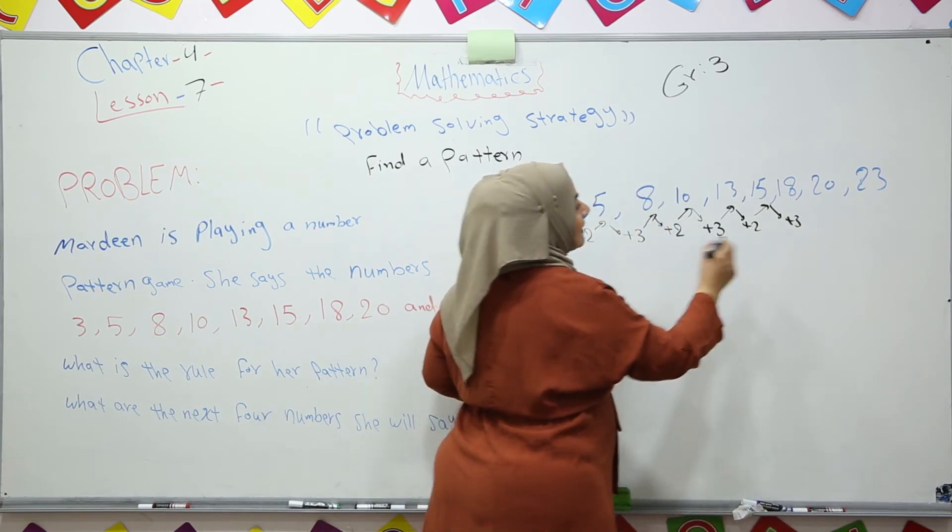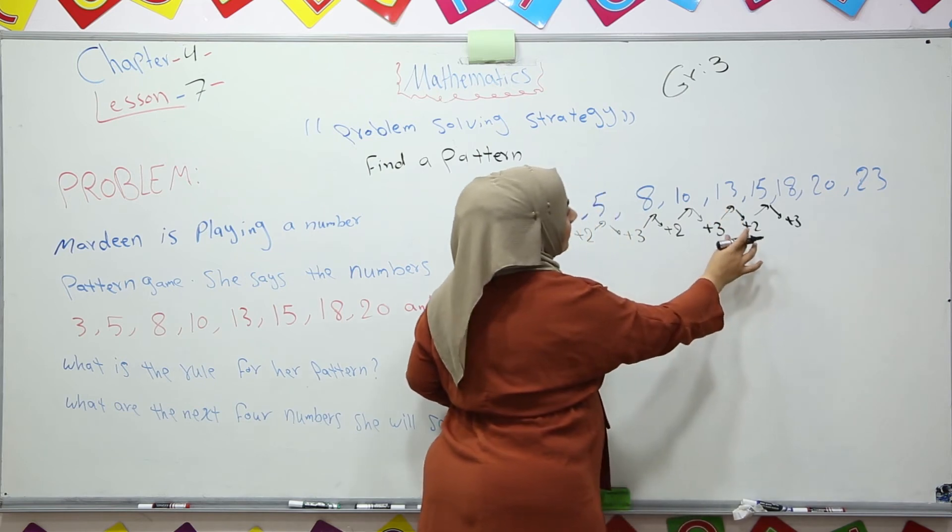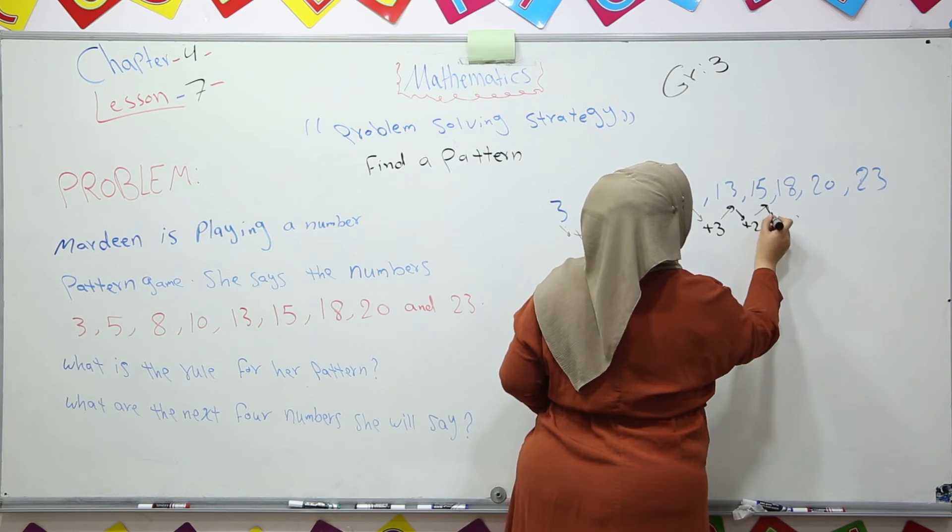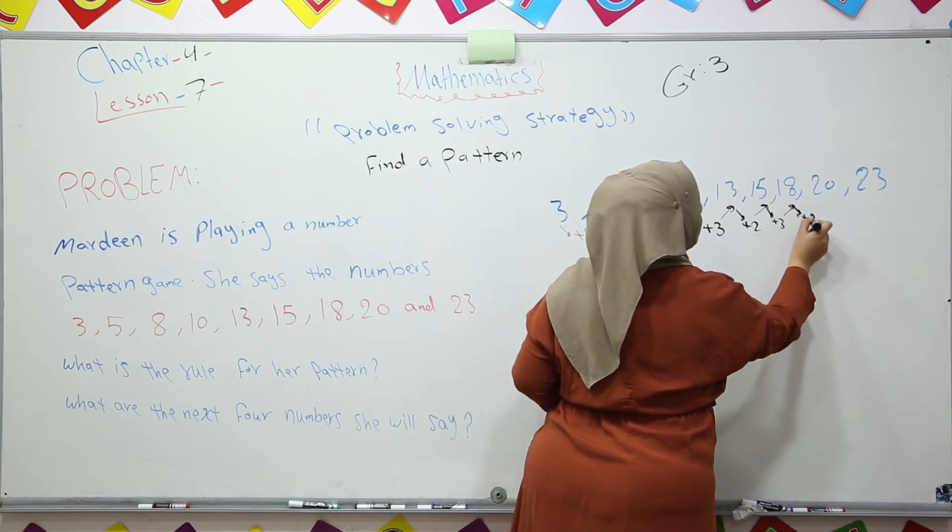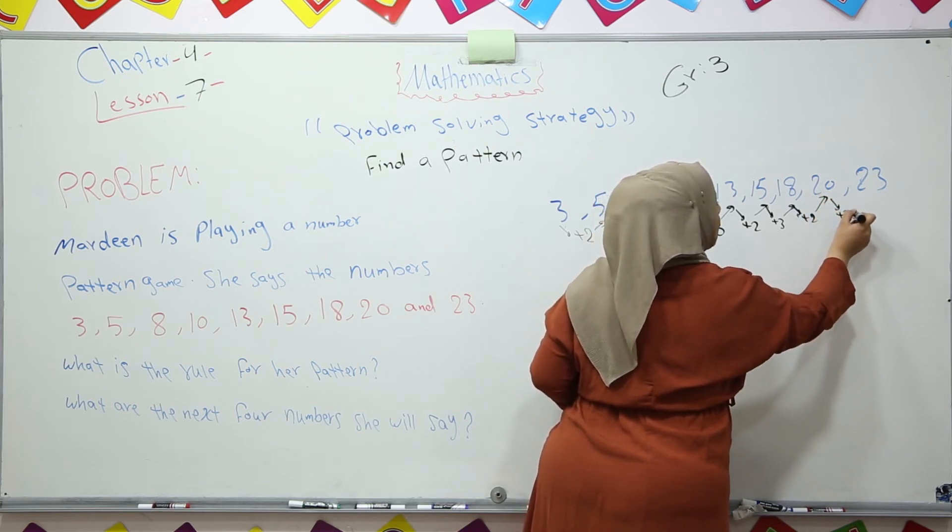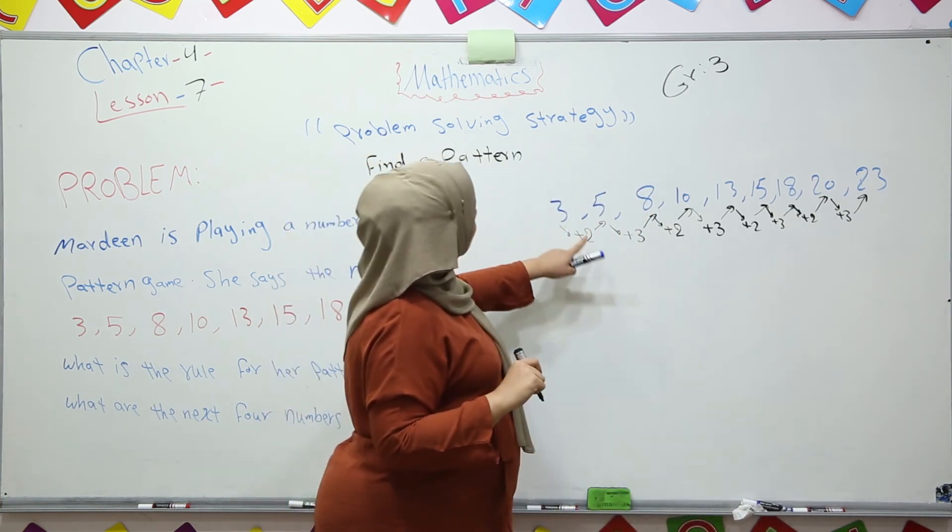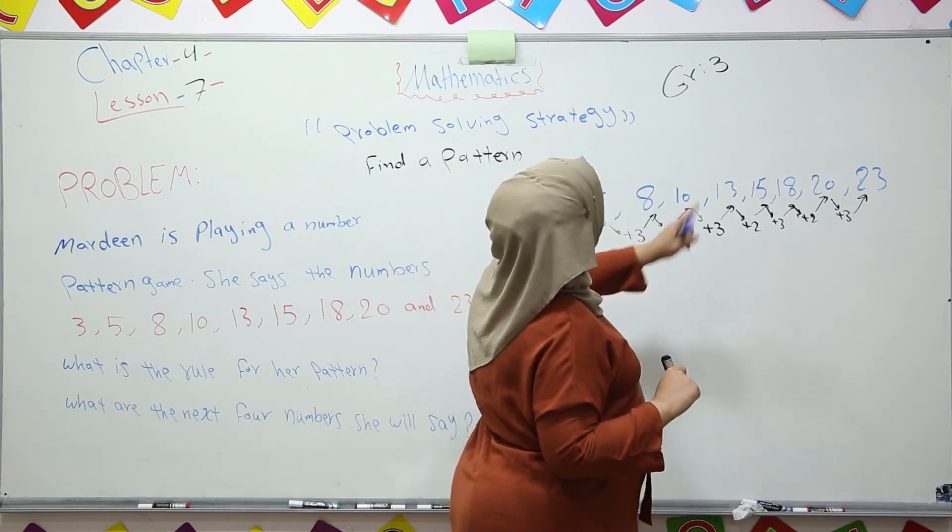That's how we get it. 13 plus 2, 15. 15 plus 3 is 18. 18 plus 2, 20. 20 plus 3 is 23. Third number plus 2, plus 3.